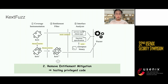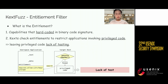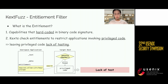Secondly, we remove the entitlement checks in kernel extensions to test code which is privileged and lacks off-the-shelf testing. MacOS uses entitlement checks widely. The entitlements are strings that are hard-coded in program code signatures. Most entitlements are only assigned to Apple applications. Therefore, programs like fuzzers developed by third parties cannot call many privileged code paths. This restriction makes such code lack testing, but attackers can still exploit vulnerabilities in protected code by building exploit chains.